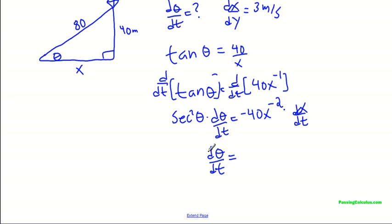So my first step is I'm going to divide both sides by secant squared. So I end up with 1 over sec²θ times negative 40 over x² (making that exponent positive) and then times dx/dt.